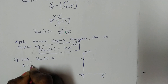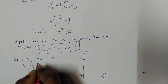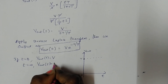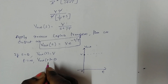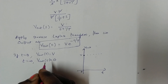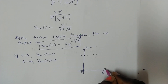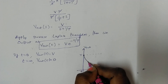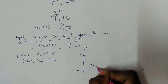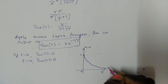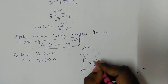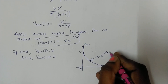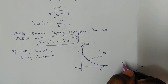If t = infinity, then V_out(t) = V · e^(−∞) = 0, since e^(−∞) = 0. So at infinity, the output becomes 0. The output waveform decays from V to 0, and the output equation is V · e^(−t/τ), where τ = L/R.